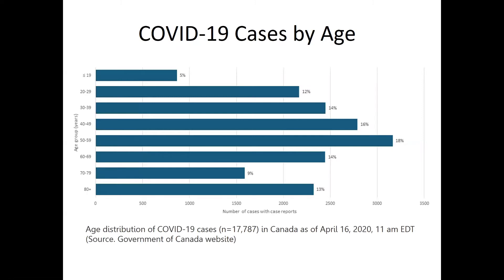Turning now to COVID-19, the first thing to note is that it affects everyone — perhaps less so children, but as Canadian data shows, all adult age groups are affected. We cannot say COVID-19 is exclusively gerophilic — it is not a disease only of older people — but we can say it is gerolytic, meaning it is harmful to older people far more than others.